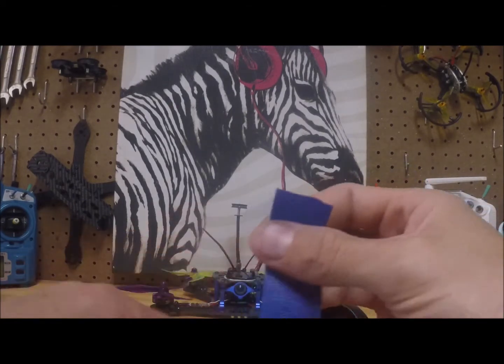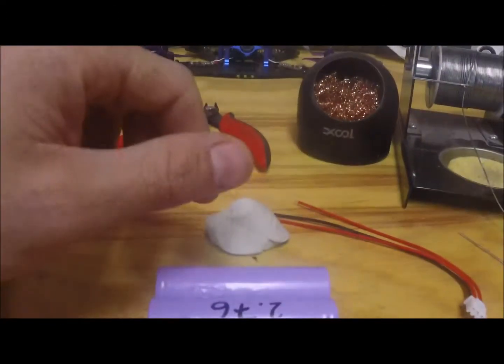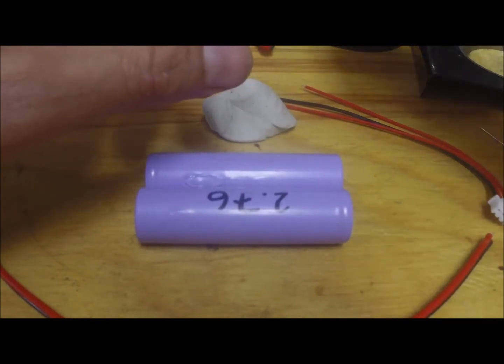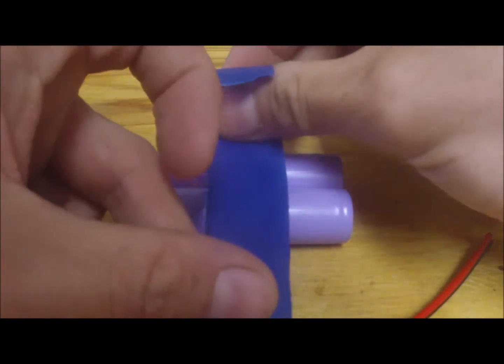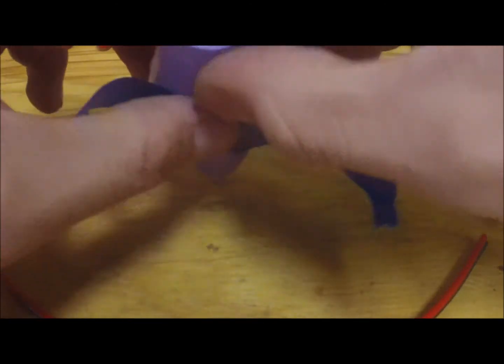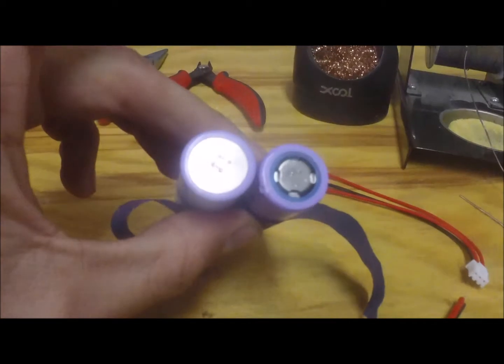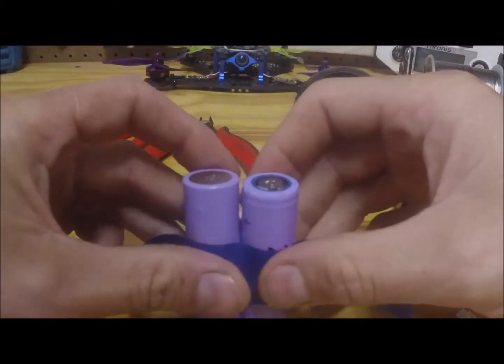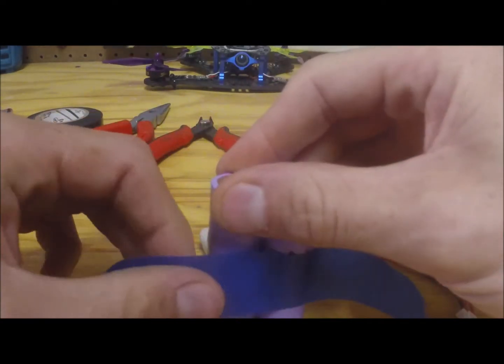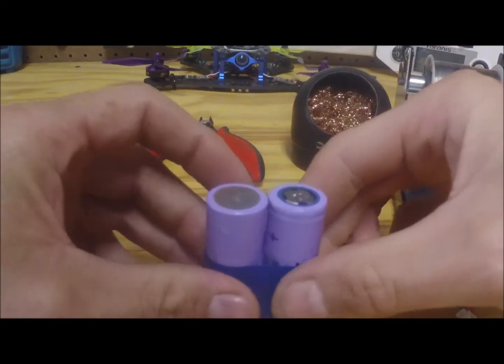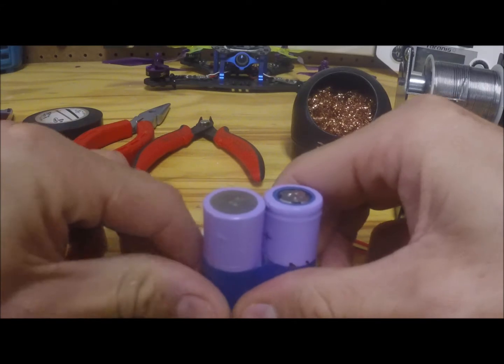The first thing I do is tape them together, and you want to tape them positive and negative like opposite of each other. This video is going to be so long. I already got my soldering iron going.